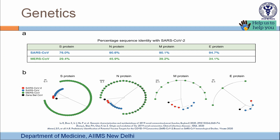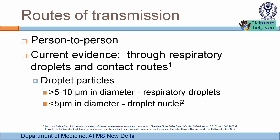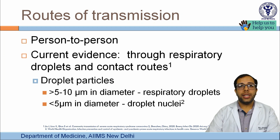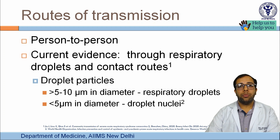Regarding routes of transmission: initial epidemiological studies traced early cases to a wet market in Wuhan. However, as case numbers increased, it became clear that the main mode of spread is person-to-person transmission.